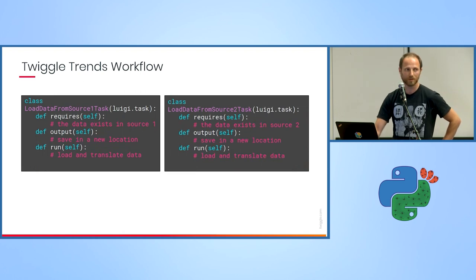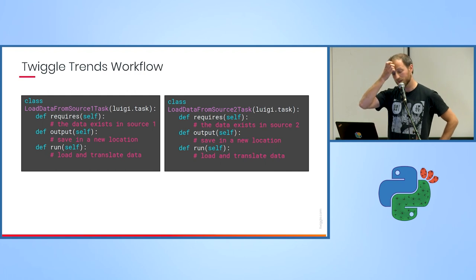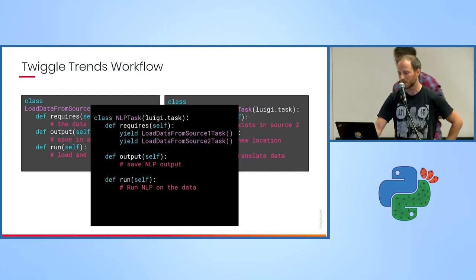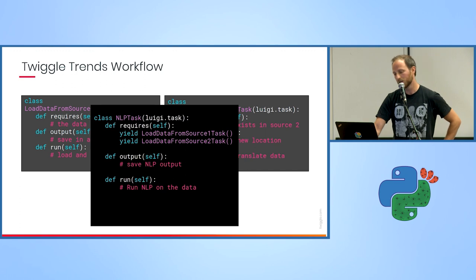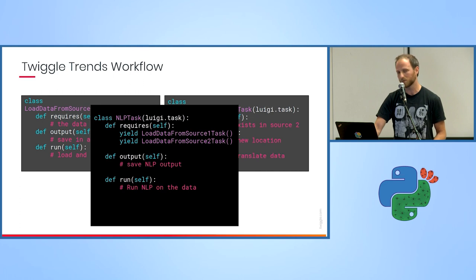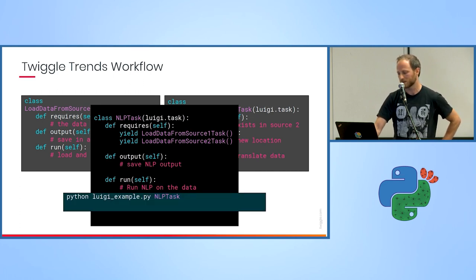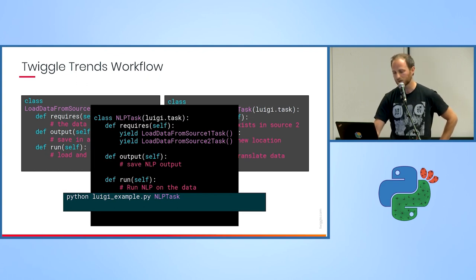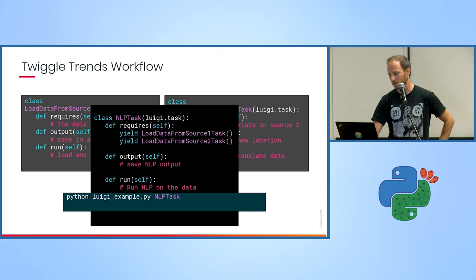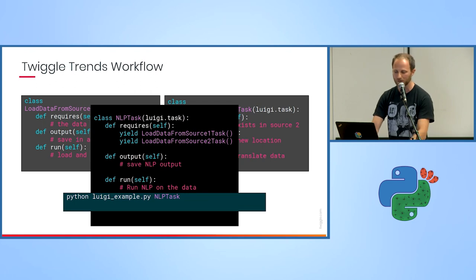Our previous workflow looks something like this in Luigi. We have two loading tasks that load data from different sources, translate it, and save it in a common location. Then we define an NLP task which depends on the two previous tasks. When we invoke the NLP task, first it checks if the previous tasks were done successfully — if so it runs its code, and if not it runs the previous tasks first. Because it's all simple Python code, we can run it from the command line by executing the file and specifying the last task to execute. The first task to be executed is actually the last task in the workflow — it's a bottom-up approach.